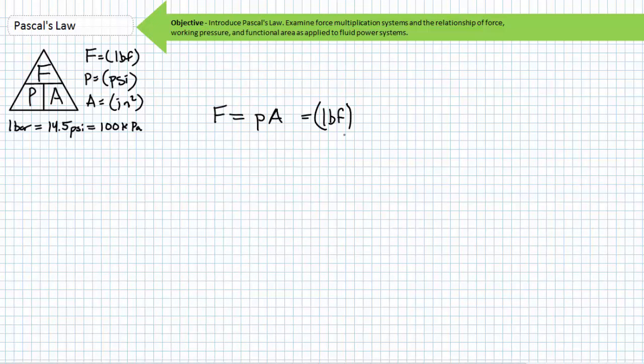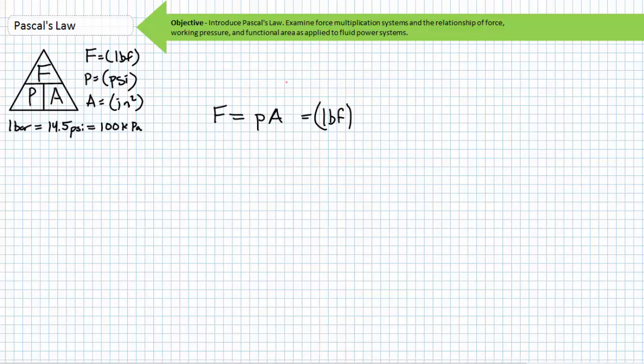Permutations of Pascal's Law demonstrate the following: given constant functional area, increasing the working pressure directly increases the exerted force. Conversely, given constant functional area, decreasing the working pressure directly decreases the exerted force. Conversely, given constant working pressure, increasing the functional area directly increases the exerted force. Finally, given constant working pressure, decreasing the functional area directly decreases the exerted force.